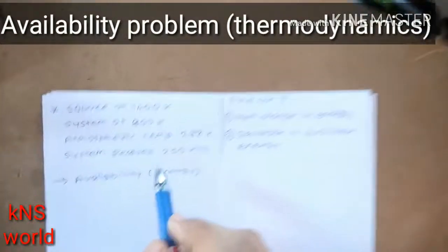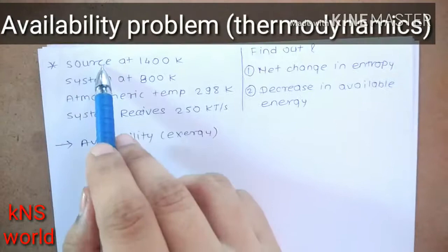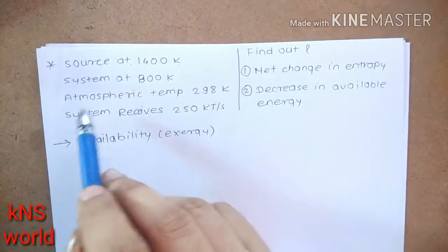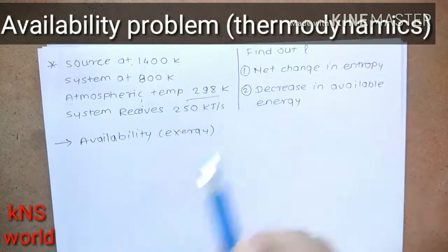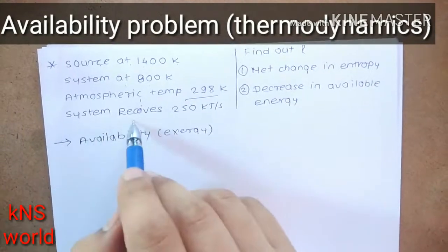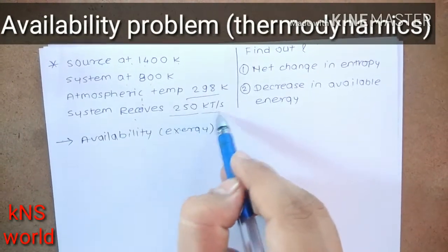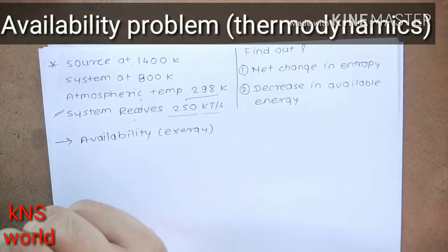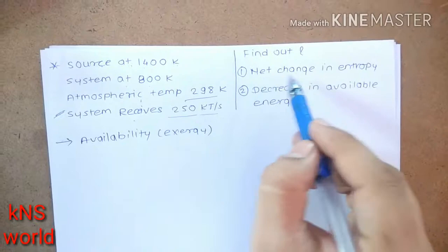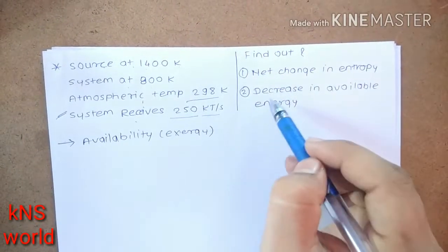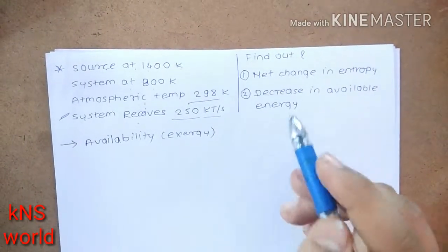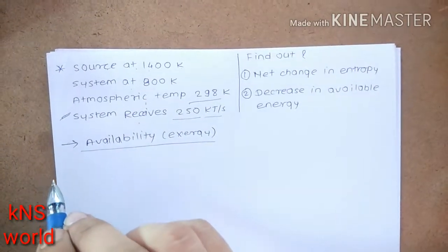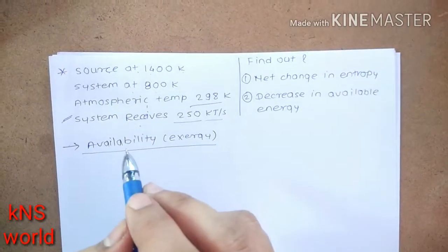In this problem, we have a source at 1400 Kelvin, a system at 800 Kelvin, and atmospheric temperature at 298 Kelvin. The system receives 250 kilojoules per second. We have to find: first, the net change in entropy, and second, the decrease in available energy. This is a problem of availability or exergy.